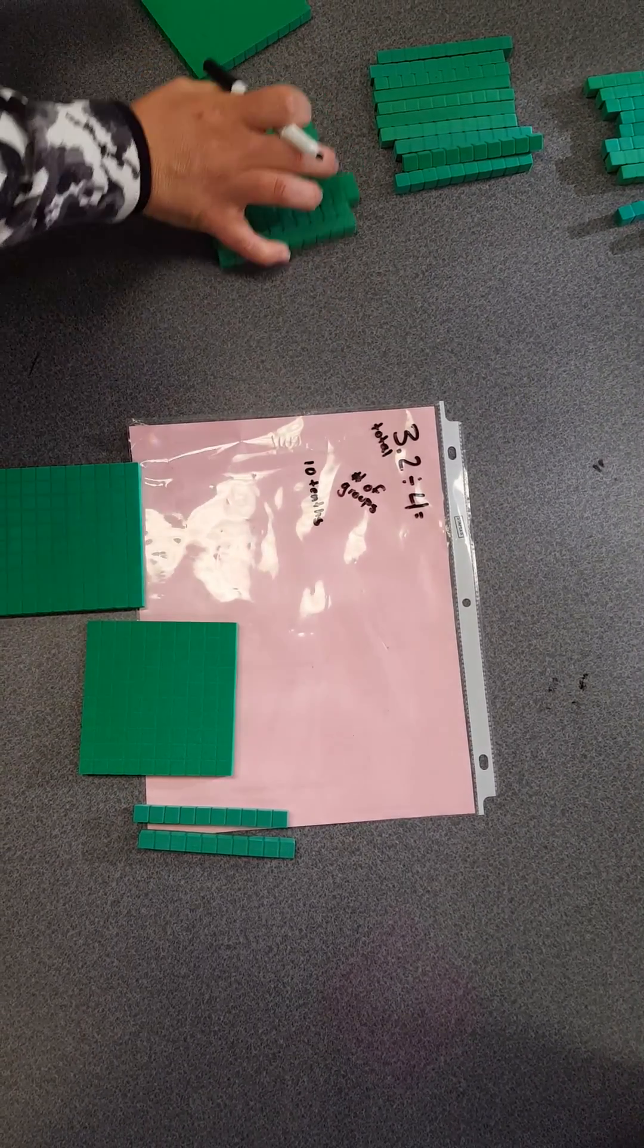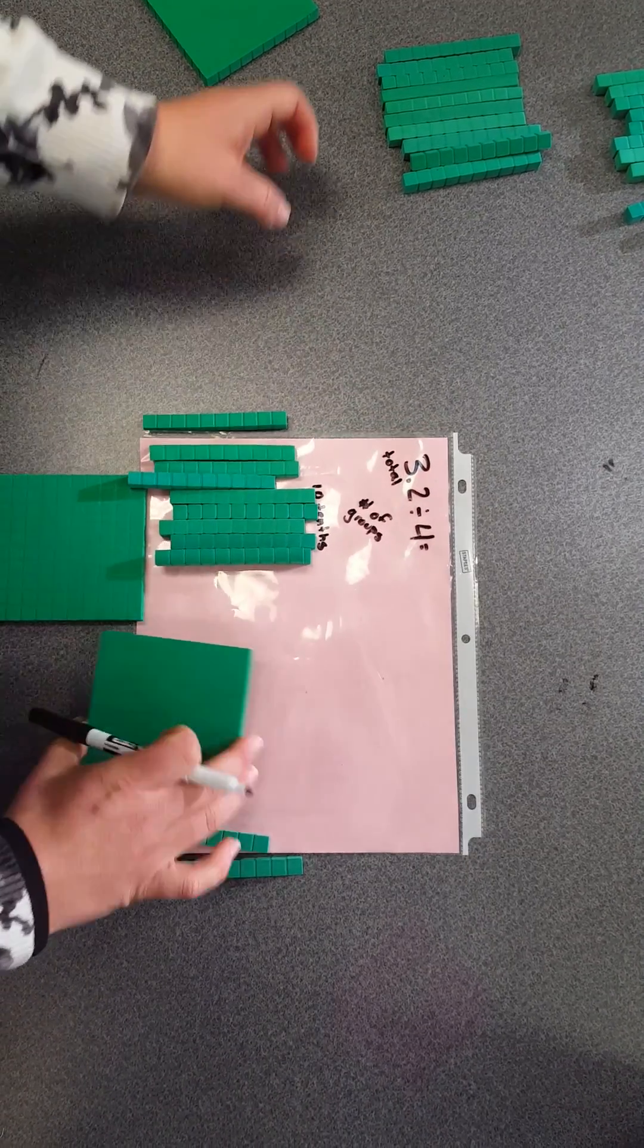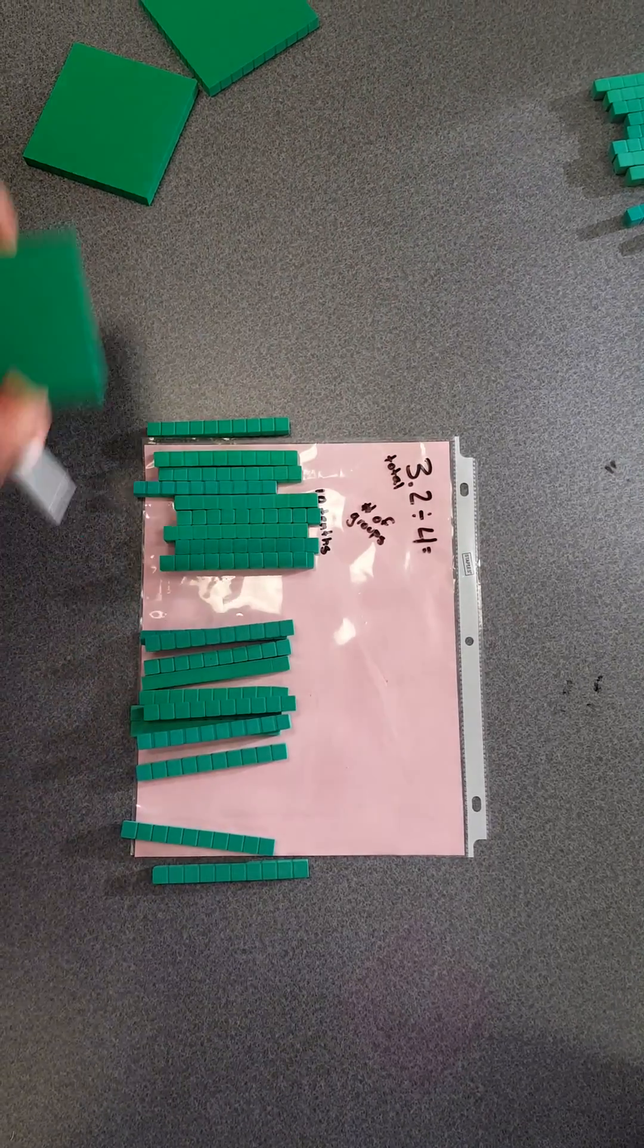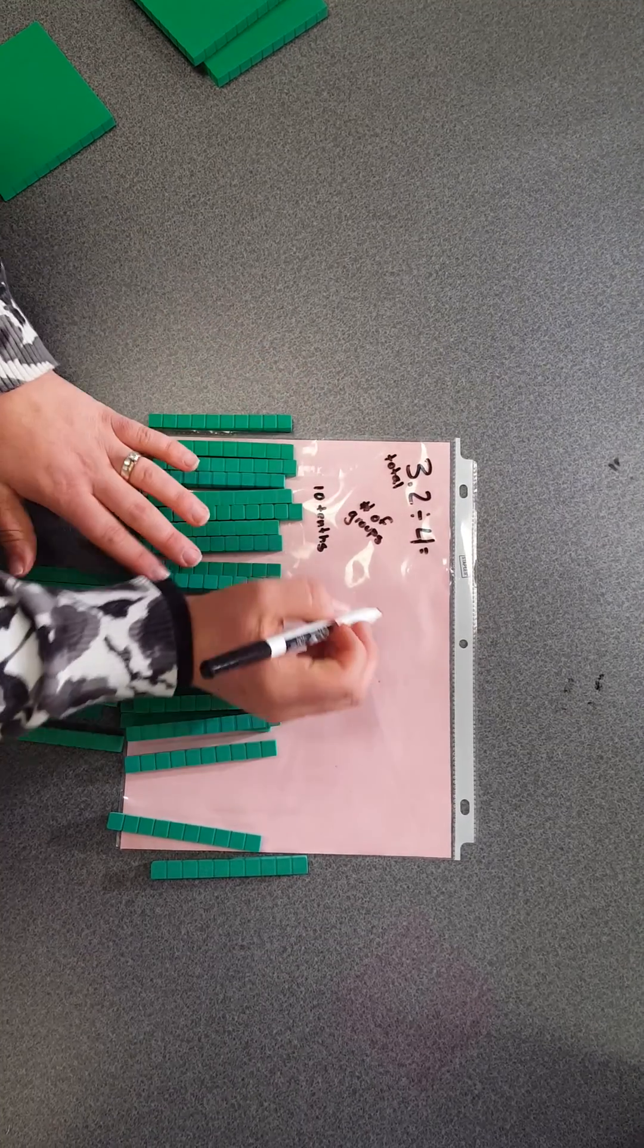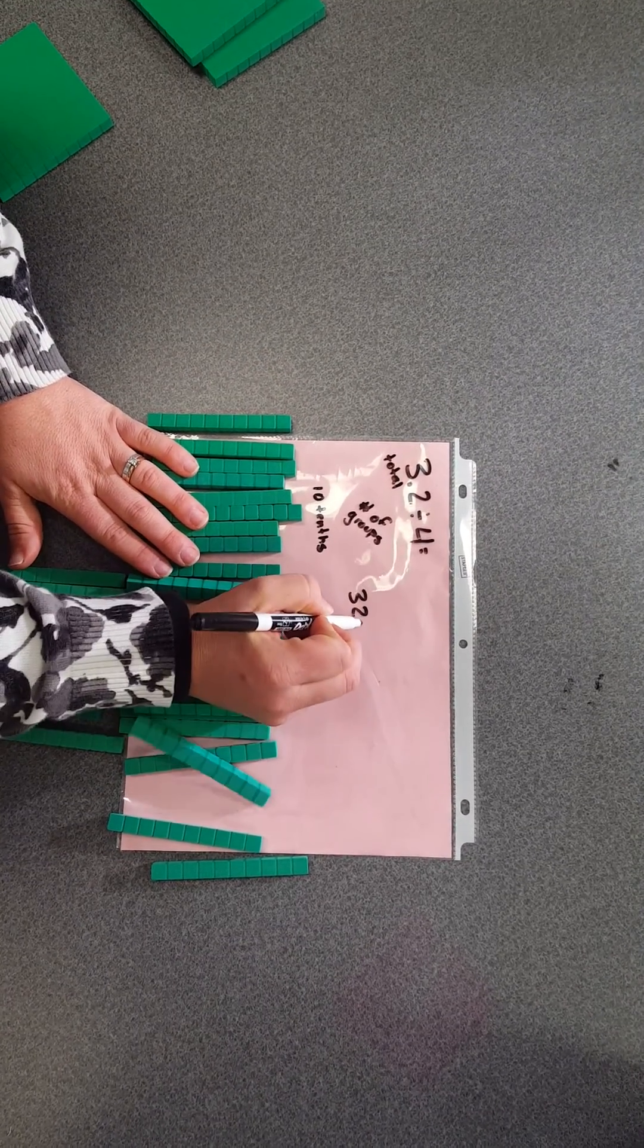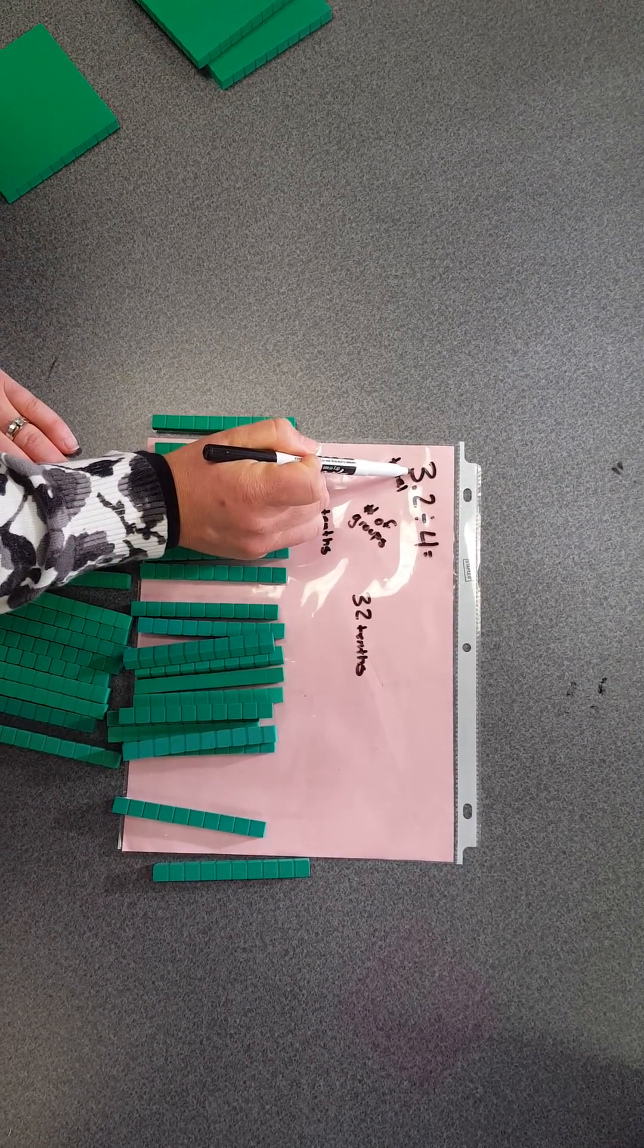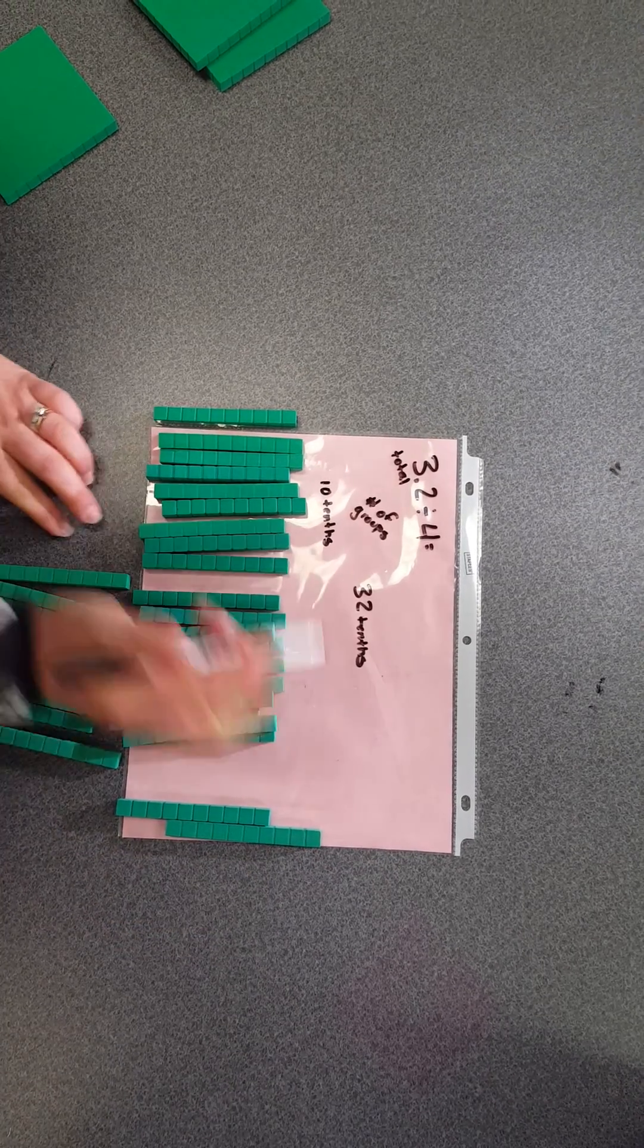So I can replace that, and I can do the same thing with each of my wholes. So again, I will have 32 tenths, because 3 wholes equals 30 tenths, and then I have 2 more, so I have 32 tenths.